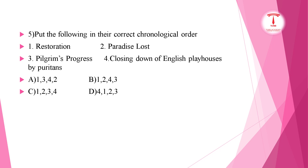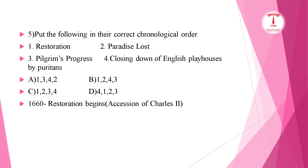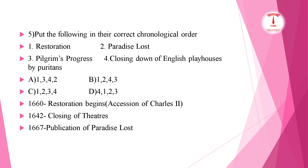Closing down of English theaters by Puritans, then Restoration — the ascension of Charles II in 1660. In 1642, the closing down of theatres occurred; 1667, publication of Paradise Lost; 1678, publication of Pilgrim's Progress. So the order is 4, 1, 2, 3. This is the correct way of learning things from previous year question papers.